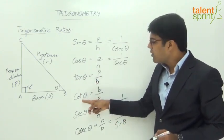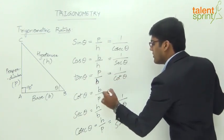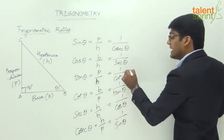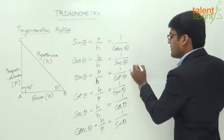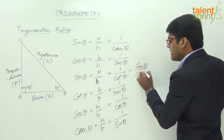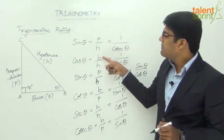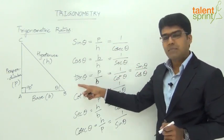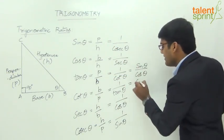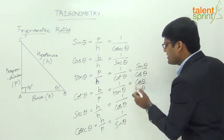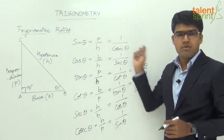Tan theta and cot theta are also reciprocals of each other — tan theta is p by b and cot theta is b by p — so tan theta equals 1 by cot theta, and cot theta equals 1 by tan theta. Moreover, tan theta is the ratio of sine theta to cos theta. If we take sine theta by cos theta, we get p/h divided by b/h, and the h's cancel, leaving p by b which is tan theta. Likewise, cot theta equals cos theta by sine theta.